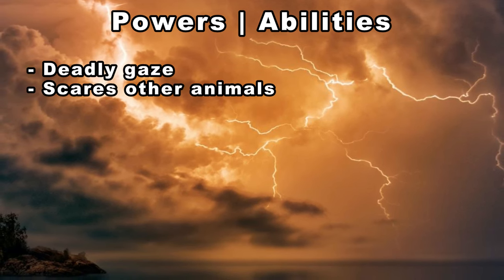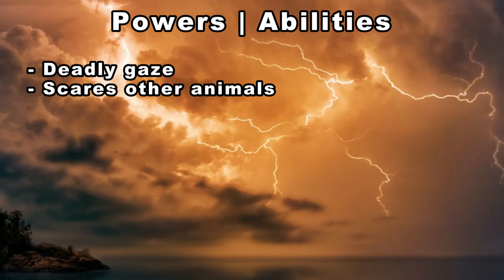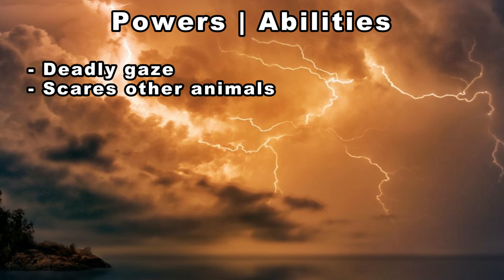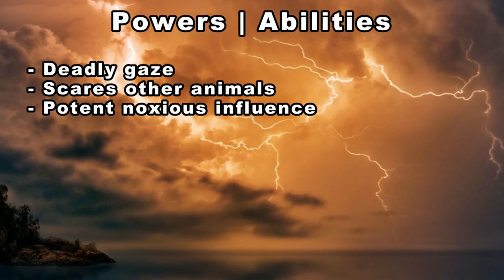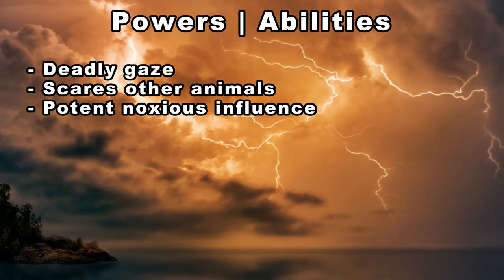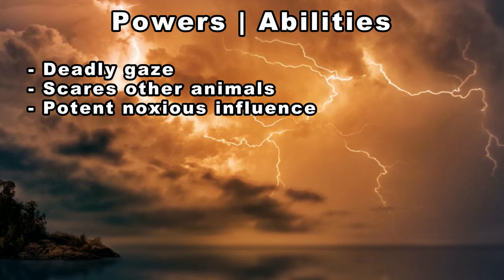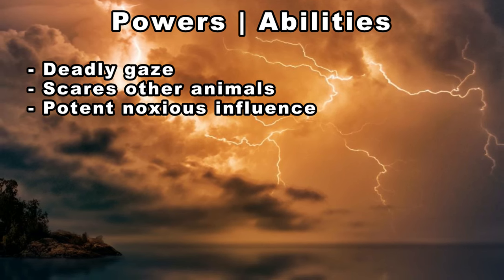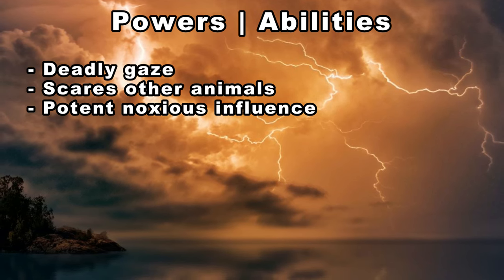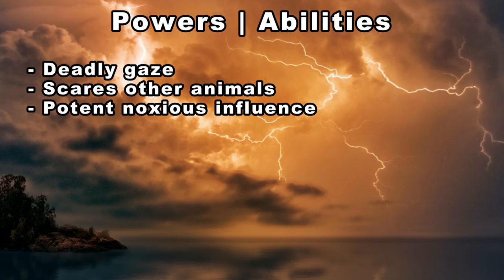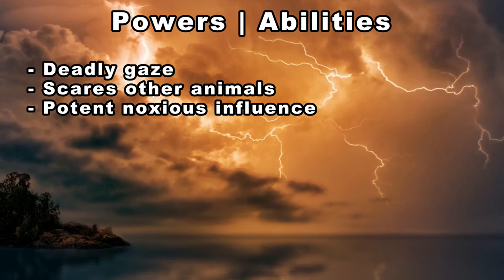Pliny then talks about its noxious influence, seemingly caused by its breath and other bodily fluids. This influence supposedly spreads around the creature and kills plants and even cracks rocks. Supposedly this influence was so potent that if a rider killed one from horseback with a spear, the poison of the Basilisk would travel up the spear, killing both the rider and the horse.